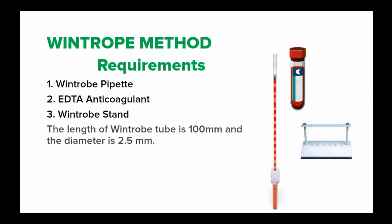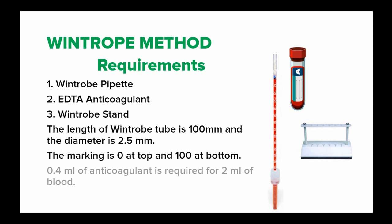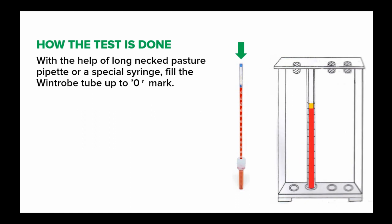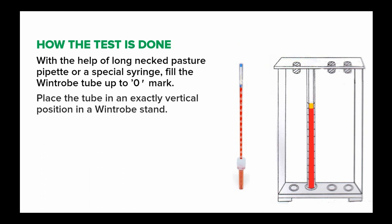The length of the Wintrobe tube is 100 mm and the diameter is 2.5 mm. The marking is 0 at the top and 100 at the bottom. The amount of EDTA anticoagulant required in this test is 0.4 ml in 2 ml of blood. With the help of a long Pasteur pipette, you fill the Wintrobe tube up to the zero mark, then place the tube in an exactly vertical position in a Wintrobe stand.